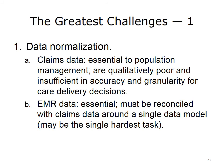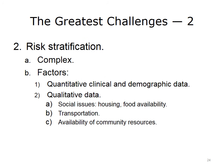EMR data must be reconciled with claims data around one single data model — that may be the single hardest task for population health management programs. Another challenge is risk stratification, which can be a very complex process. Quantitative clinical and demographic data are sometimes relatively easy to get from claims and EMRs, but qualitative data is less available. Issues such as social determinants — housing, food availability, transportation, availability of community resources — often require a face-to-face assessment prior to starting an intervention.